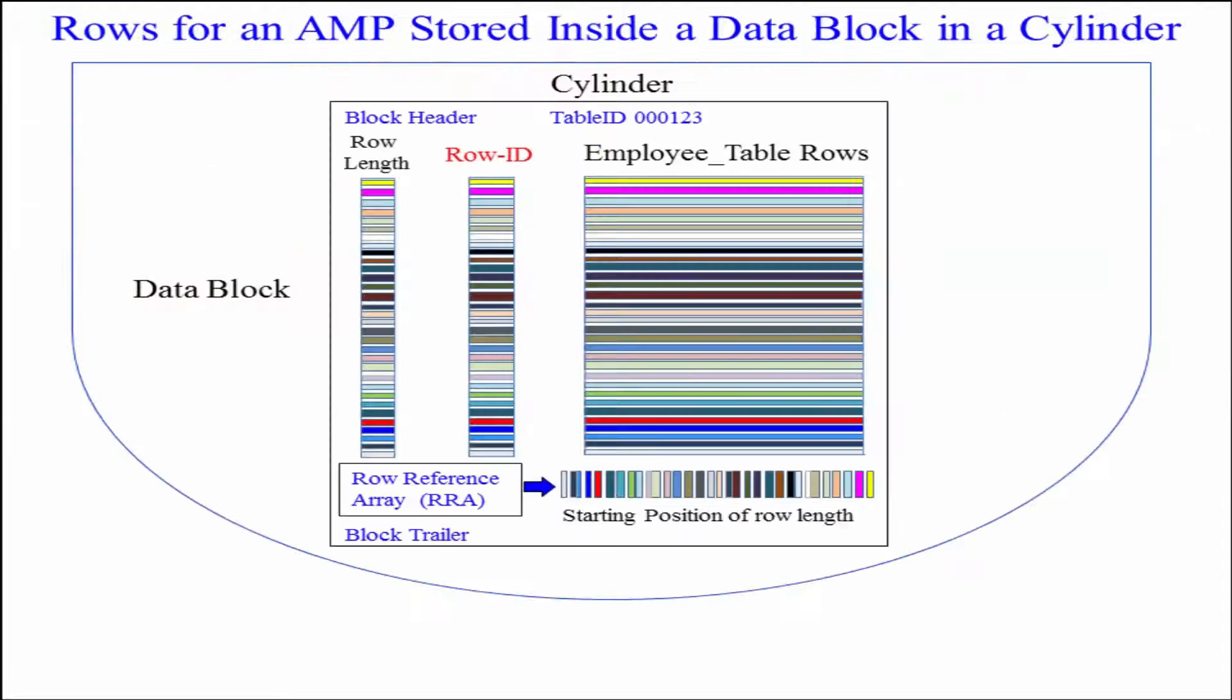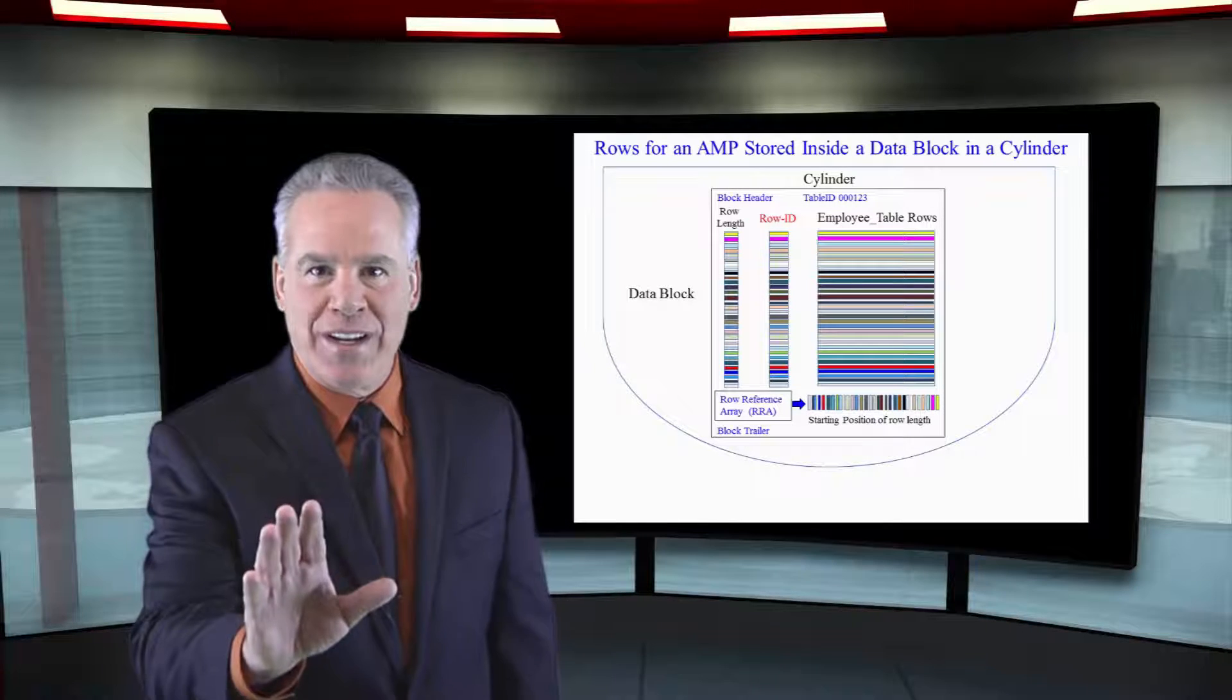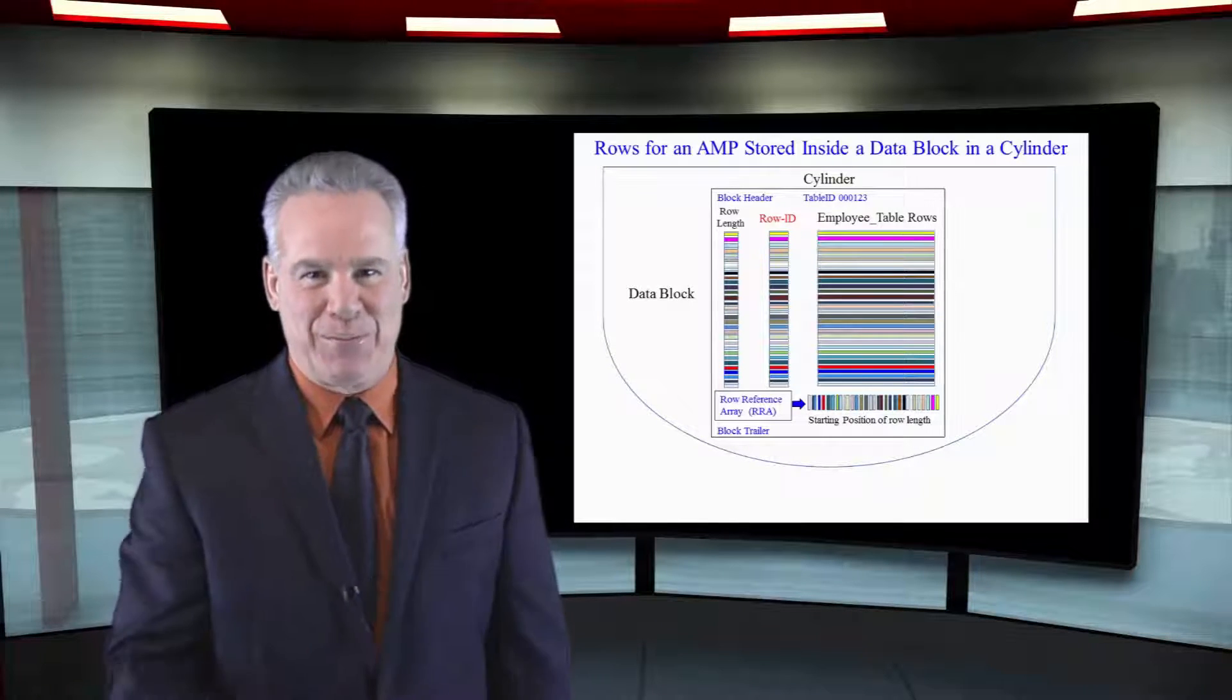In front of that is the starting position row length. That's how the row reference array works. They can go to the row reference array and say, oh, here's the starting position of the row. And then here's the row length. And here's the row ID. And then there's the row. That's what I need you to understand at this point.